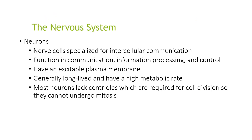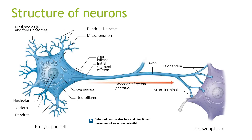Neurons are nerve cells specialised for intercellular communication. They function in communication, information processing, and control. They have an excitable plasma membrane, are generally long-lived, and have a high metabolic rate. Most neurons lack centrioles, which are required for cell division, so they cannot undergo mitosis. In the diagram you can see dendritic branches, mitochondria, the nucleolus, nucleus, dendrites, axons, neurofilaments, axon terminals, and the axon hillock. The direction of the action potential moves from the presynaptic cell to the postsynaptic cell along the axon.